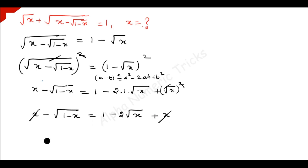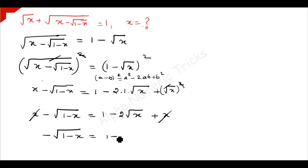What is left is: negative square root of 1 minus x is equal to 1 minus 2 times square root of x.